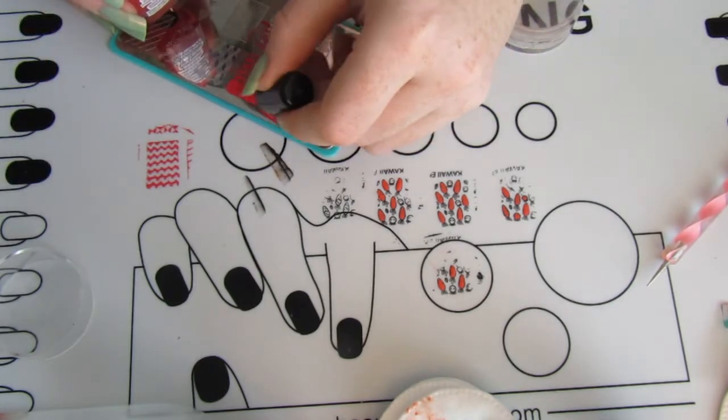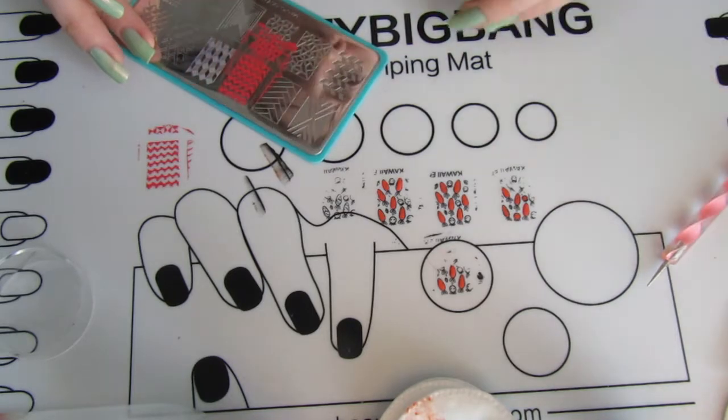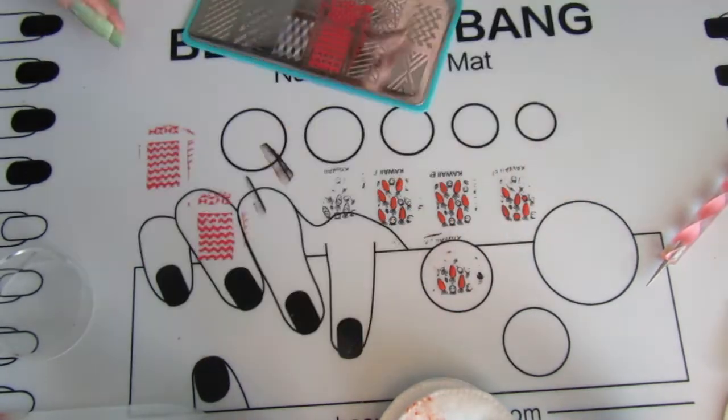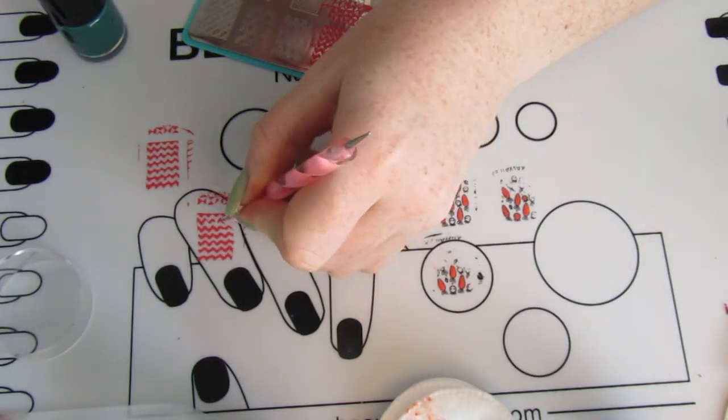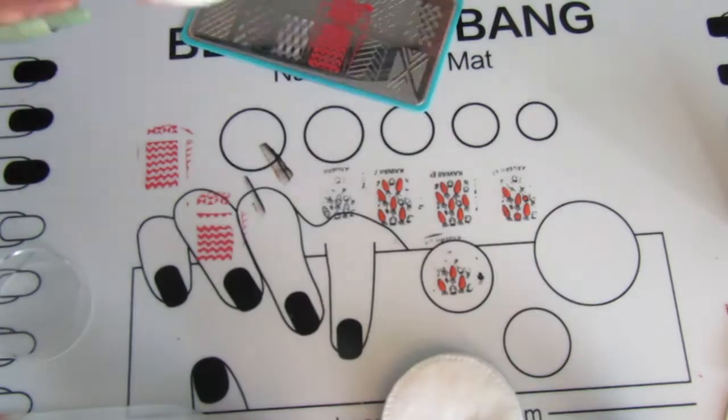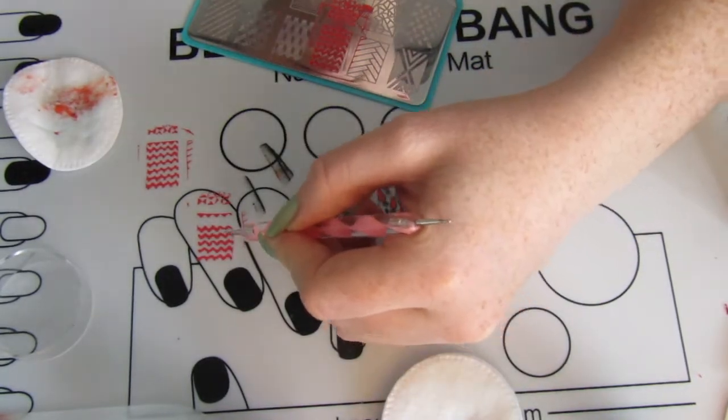The next stage was to create the Easter egg. For this one, I used a Maniology plate. I stamped some squiggly lines onto the stamping mat, and then I removed some of the lines.